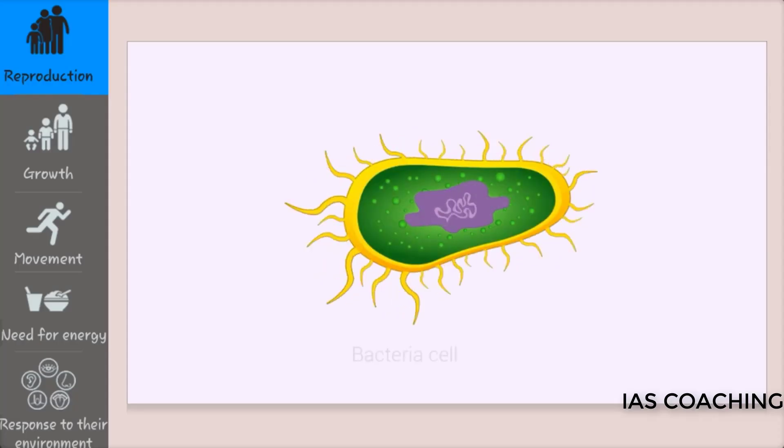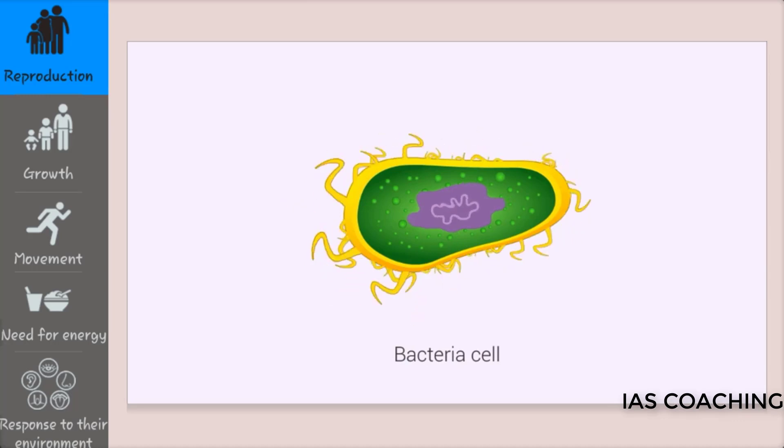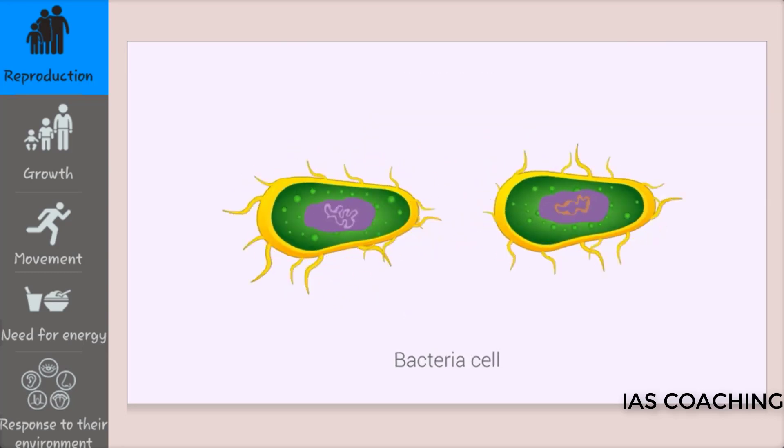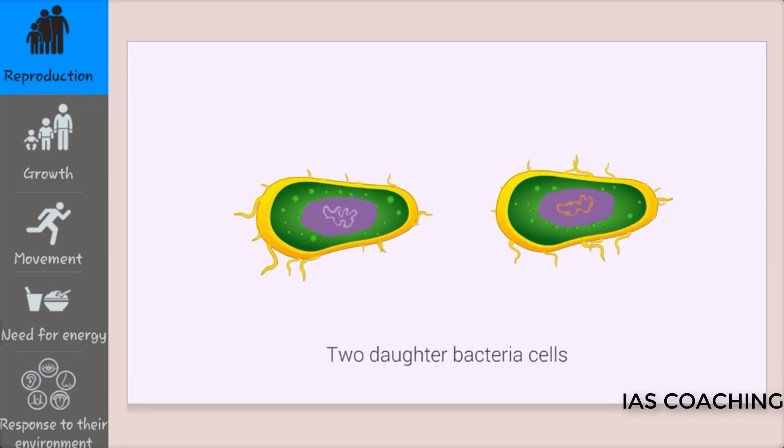For most prokaryotes like bacteria, the reproductive process starts with the replication of the chromosome which contains DNA. The new chromosome attaches itself to the plasma membrane and the two chromosomes migrate to opposite ends of the cell. The plasma membrane in the middle of the cell grows inward until it closes to separate the cell into two daughter cells, each containing complete genetic material.